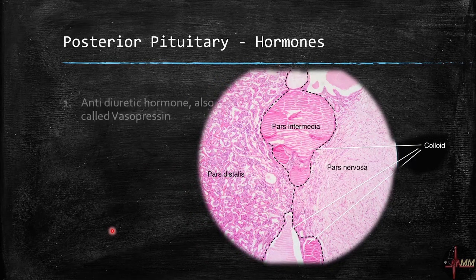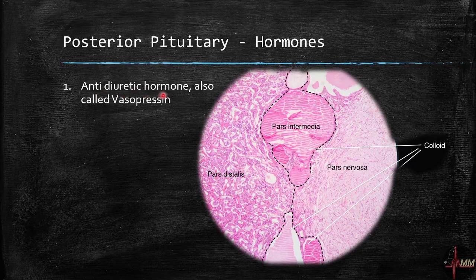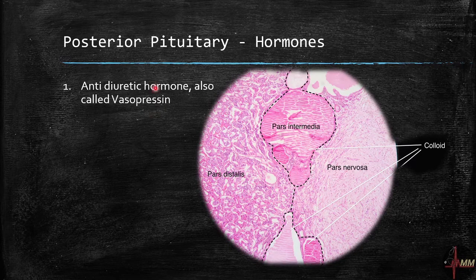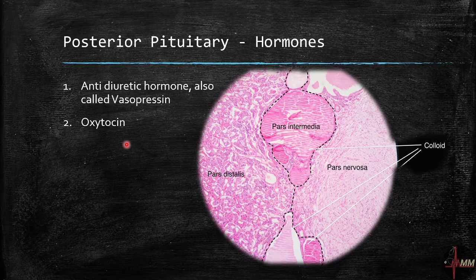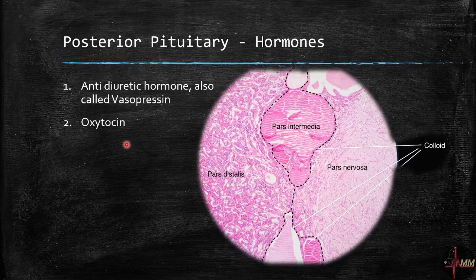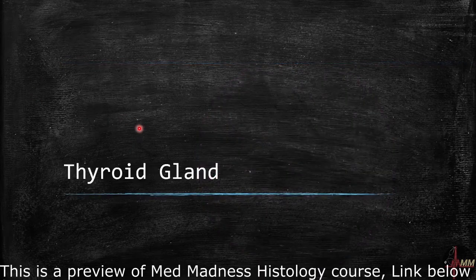The two posterior pituitary hormones are: ADH (antidiuretic hormone), also called vasopressin, which acts on the kidney tubules to reabsorb water — to be covered in the renal session; and oxytocin, also called the love hormone, which acts on the smooth muscles of the uterus causing contraction, and on the smooth muscles of the mammary gland to help in milk secretion. The next chapter will cover the thyroid gland.